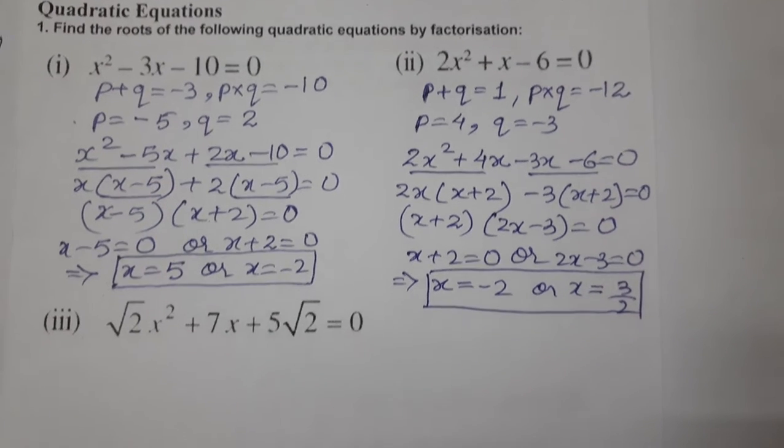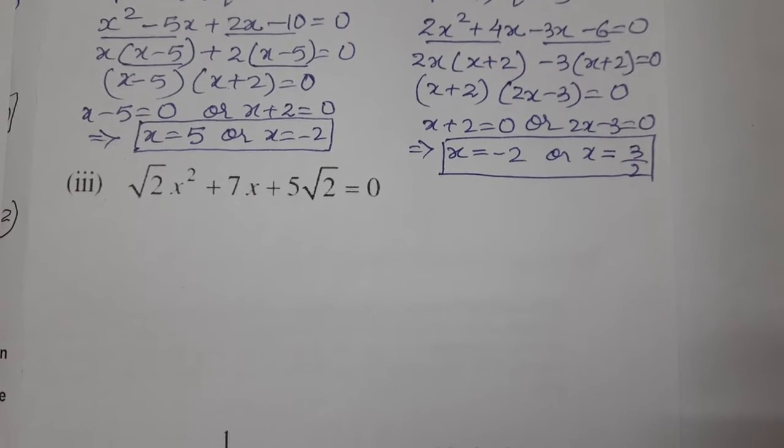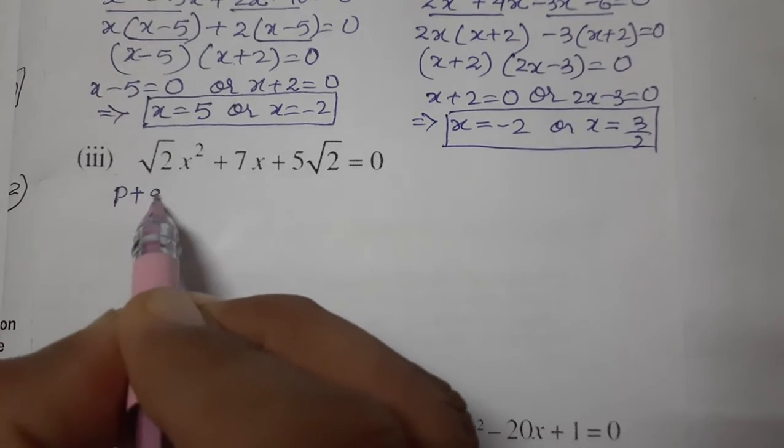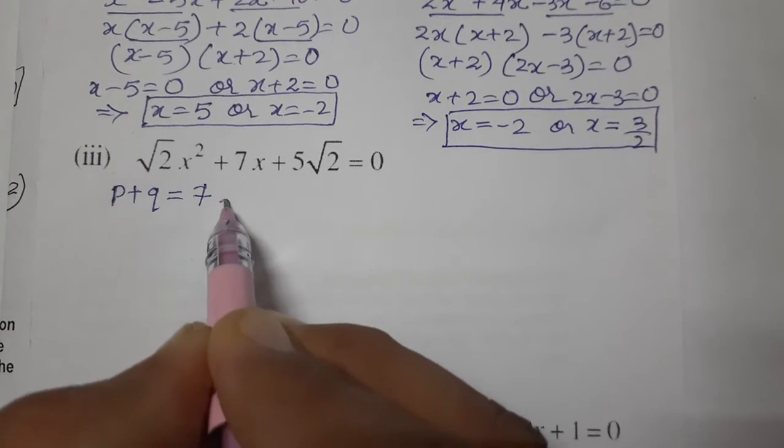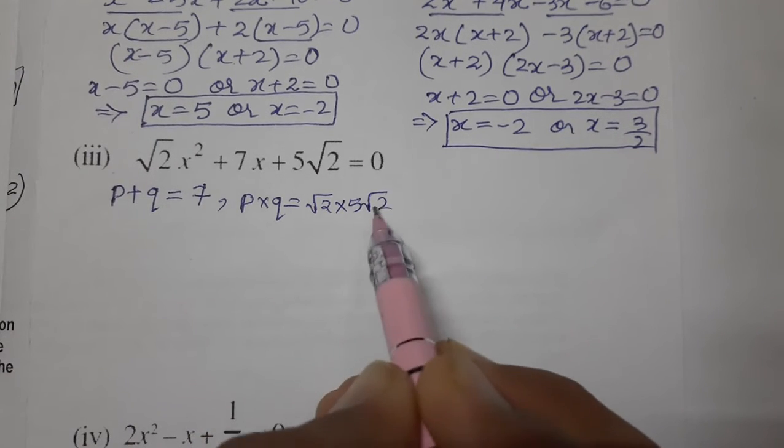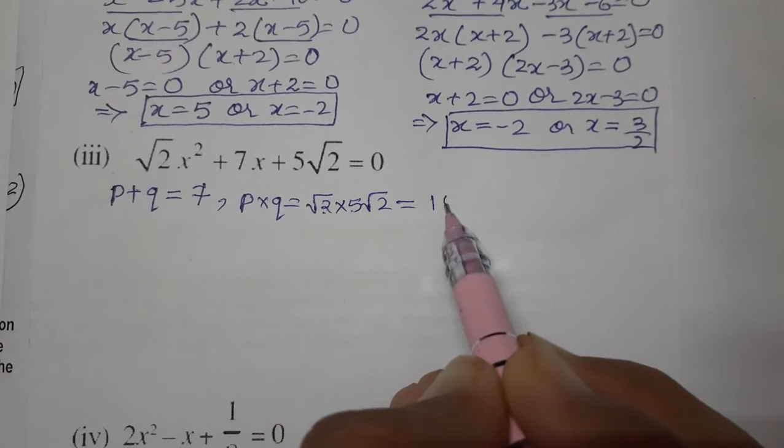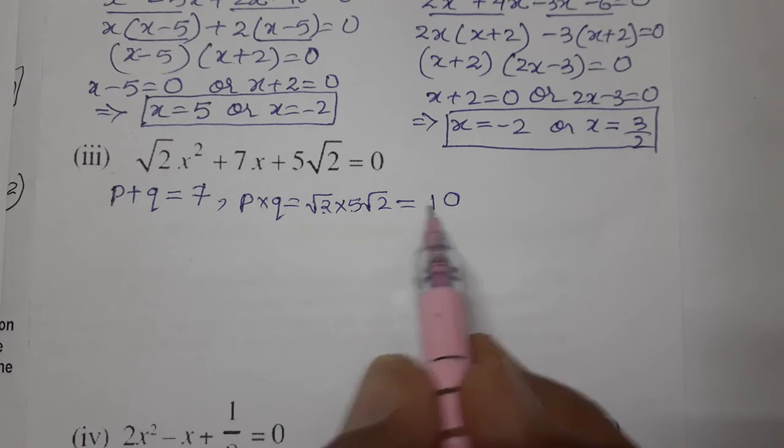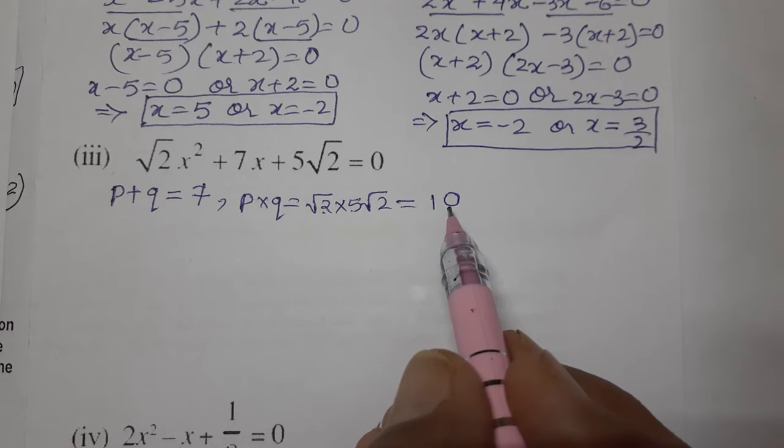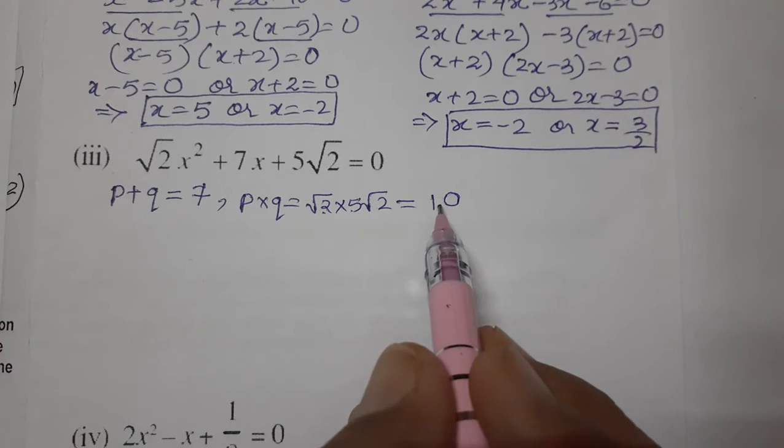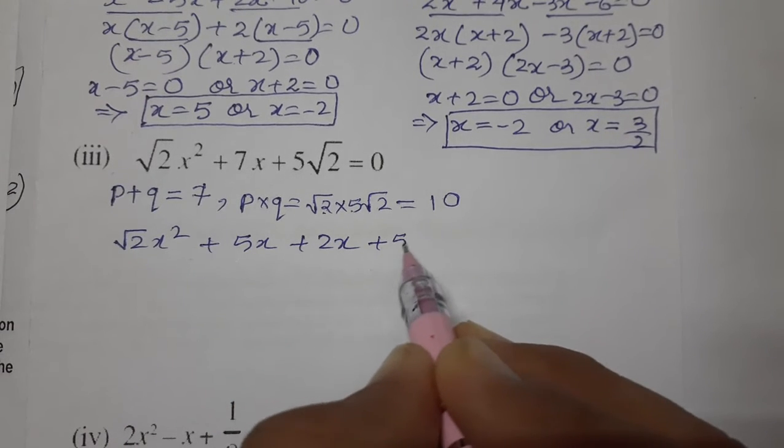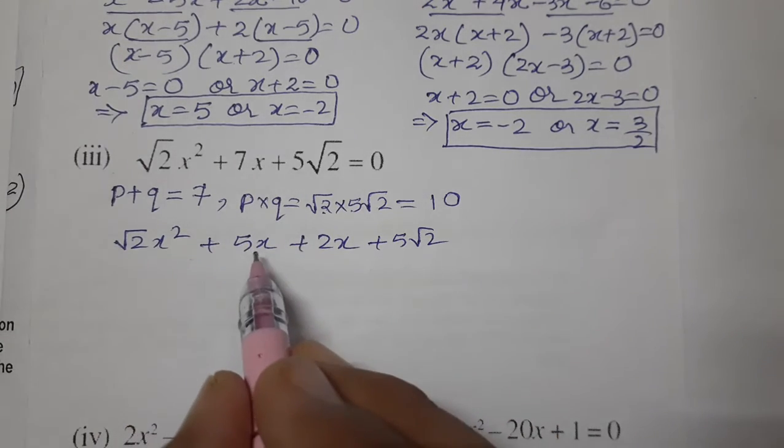Now the third one: √2x² + 7x + 5√2 = 0. We have to think of two numbers such that on adding we need 7, and on multiplying we need √2 × 5√2 = 10. Think of two numbers with sum 7 and product 10. The factors of 10 are 5 and 2. 5 + 2 = 7 and 5 × 2 = 10. So we got the numbers. This is middle term split: 7x is written as 5x + 2x.